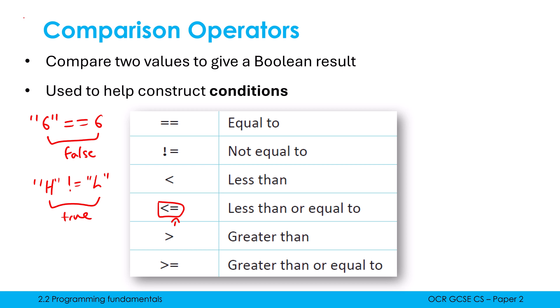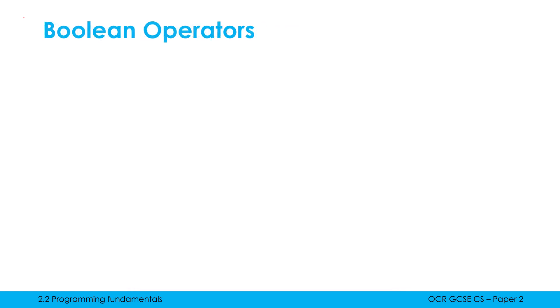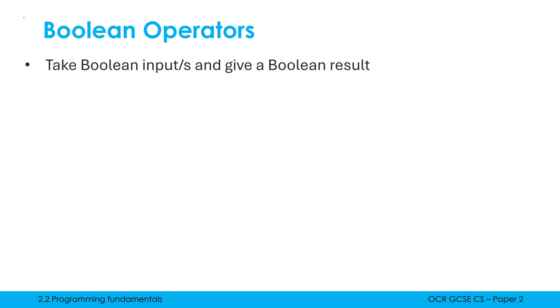So comparison operators give us a Boolean result — either true or false. The Boolean operators will also give us a Boolean result, either true or false, but they must take in Boolean values as inputs — it's a single input with the NOT operator. We've got three Boolean operators: NOT, OR, and AND. We'll learn about these in more detail later in paper two, so I'll do a fuller video on these, but here is just a summary.